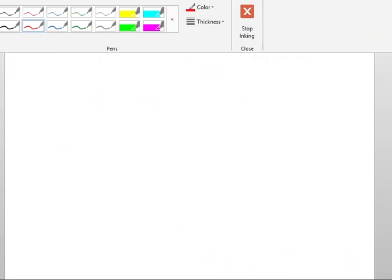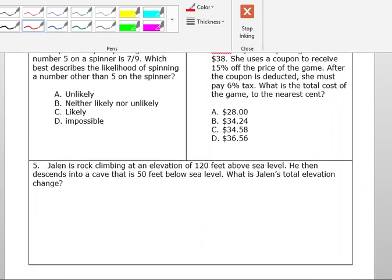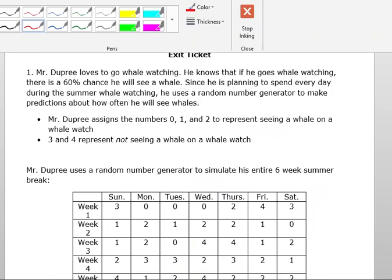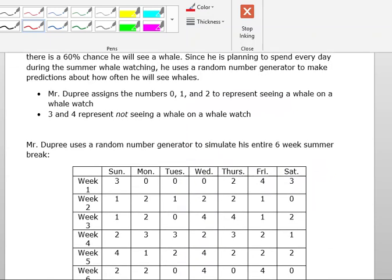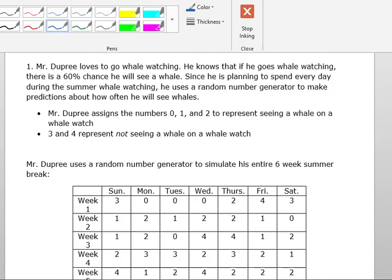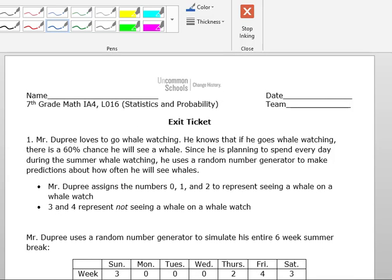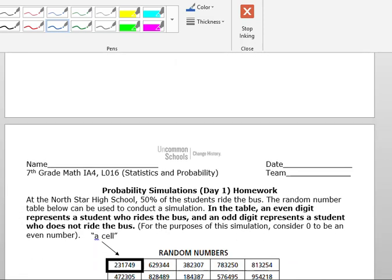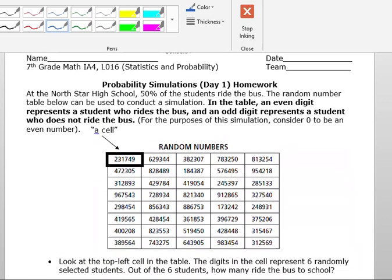We're going to move on to homework, which will give us a little bit more practice with this trial situation with our simulations, but also give us a little bit of a review. Here, Mr. Dupree loves to go whale watching. Oh, is this the exit ticket? Oh, that was the exit ticket. We'll go over homework.